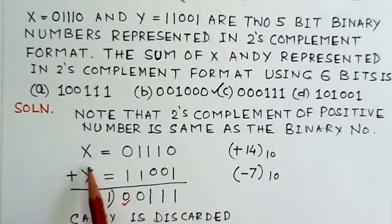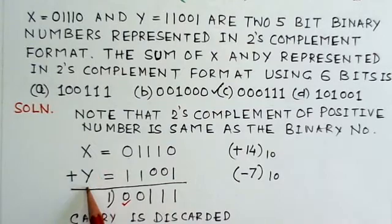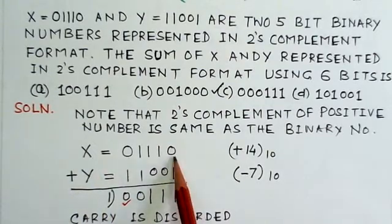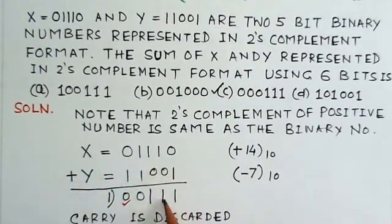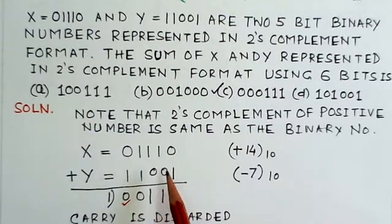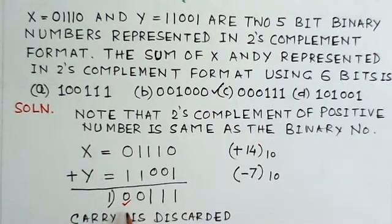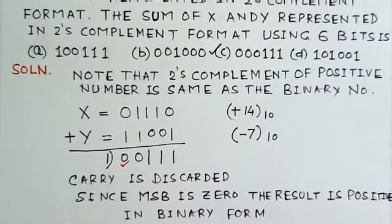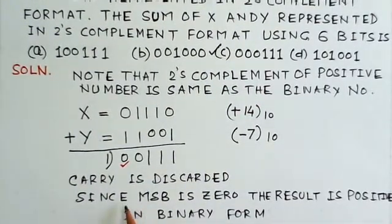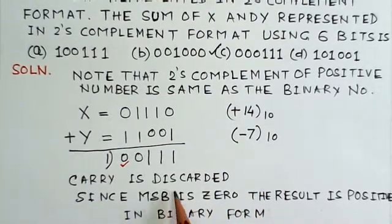Now we have to add these two numbers, X plus Y: 01110 plus 11001. We perform the addition with carries, and this gives us the result. Here, the carry is generated in the result. And as usual, the carry is discarded.